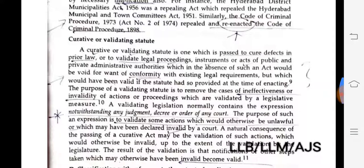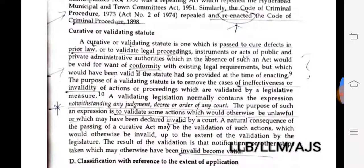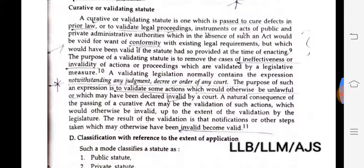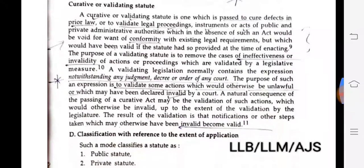Similarly, the Code of Criminal Procedure 1973 (Act 2 of 1974) repealed and re-enacted the Code of Criminal Procedure 1898 — it first repealed and then re-enacted the earlier code. Curative or validating statute. A curative or validating statute is one which is passed to cure defects in prior law or to validate legal instruments, acts of public and private administrative authorities, which in the absence of such an act would be void for want of conformity with existing legal requirements.